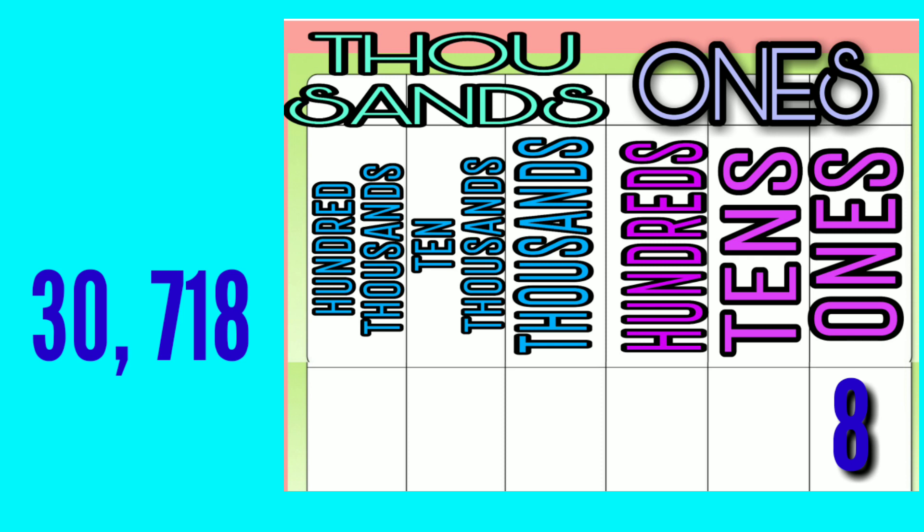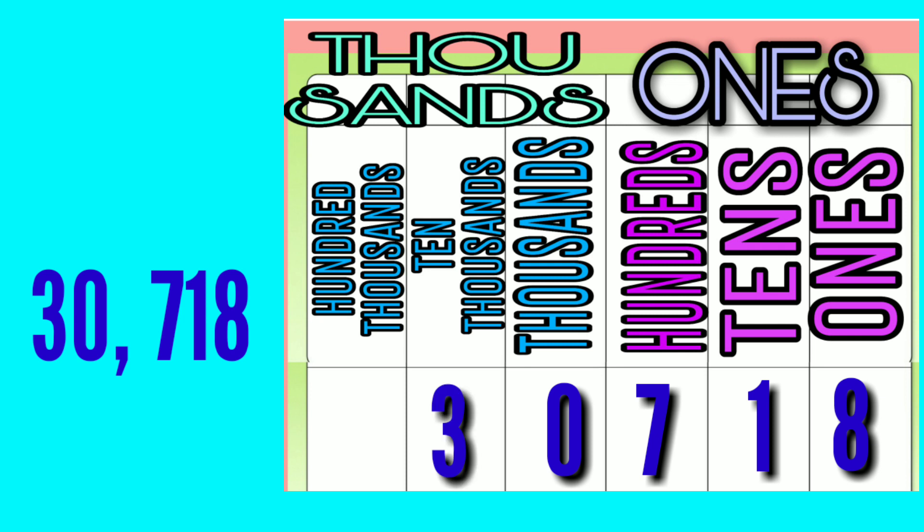Let's have another number: thirty thousand, seven hundred eighteen. Again, start from the rightmost digit, which is eight — that will be the ones place. One is the tens place. Seven is the hundreds place. Zero is the thousands place. And three is the ten thousands place.